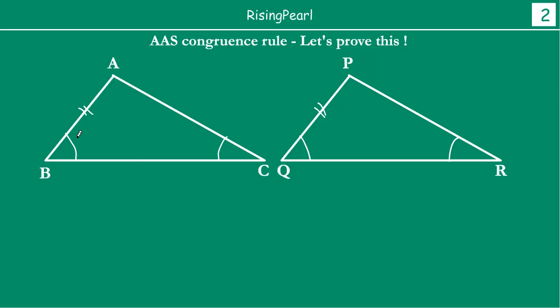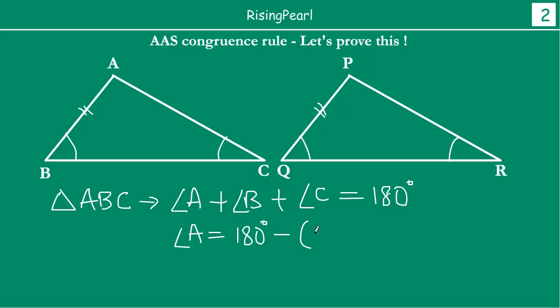Now if you take triangle ABC, you notice that in triangle ABC, angle A plus angle B plus angle C is equal to how much friends? You know sum of three angles of a triangle is 180 degrees. Right. Which means angle A, because B and C are equal in both cases, then we can say angle A is equal to 180 degrees minus angle B plus angle C. This is our first condition.